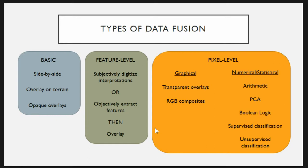The types of data fusion I have experimented with can be categorized this way. At the most basic level: looking at things side by side or overlaid in a GIS, putting data on top of a terrain surface or satellite imagery. At the feature level, you can digitize features using subjective interpretation, or extract features using segmentation or thresholds and combine those in a GIS overlay. At the pixel level, there are pixel-by-pixel mathematical operations, transparent overlays of raster images, and composites using RGB color combinations as used in satellite remote sensing.